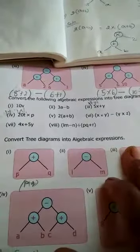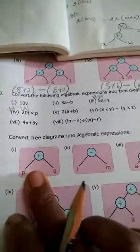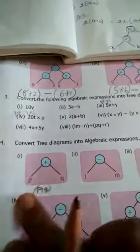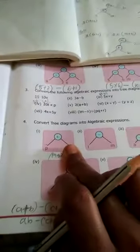Next, roman numeral 4. Convert tree diagram into algebraic expressions. Tree diagram is given, you write the algebraic expression. Multiplication symbol you will write with the number, but bracket is everything.